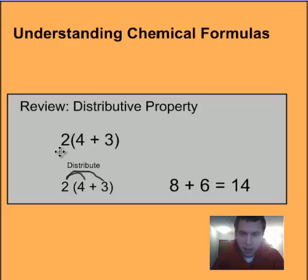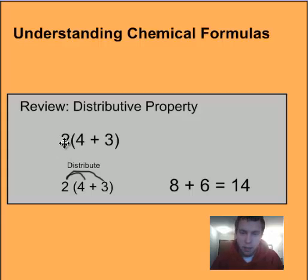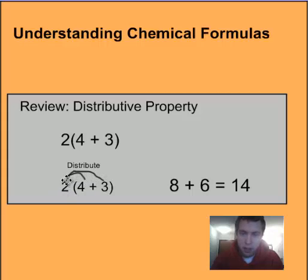One thing I want to review before we begin is the distributive property, which we learned in math. We're actually going to be using that in this lesson. So remember the distributive property: if we have a 2 outside of the parentheses and you're multiplying that times the sum of 4 and 3, you can distribute that 2 to both parts — so 2 times 4 plus 2 times 3, which would be 8 plus 6, and then you get your answer of 14.